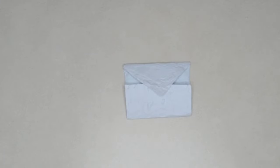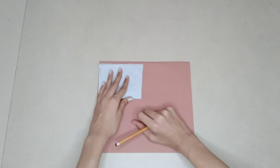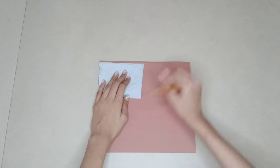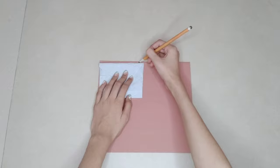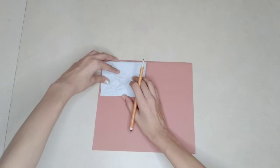Fold the top part to make an envelope shape and stick the sides. Take any colored paper and mark the dimensions of your envelope on it, making sure the markings are smaller than the envelope.